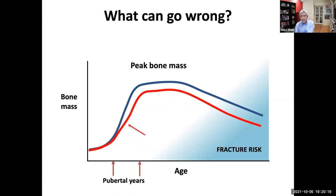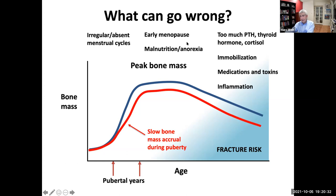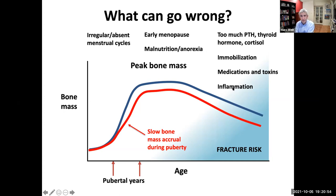A lot of things can go wrong here. If you have malnutrition as a child, or kids who have cancer and receive chemotherapy, they never really achieve peak bone mass. Later on in life there are a number of additional problems. When I see patients with osteoporosis I'm thinking through all of these issues to make sure there isn't a reversible or modifiable risk factor contributing to bone loss and pushing people into that area where the risk of breaking bones is increased.